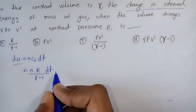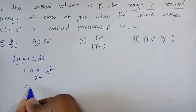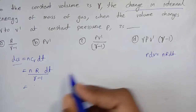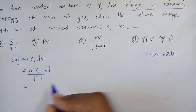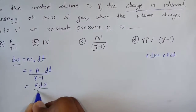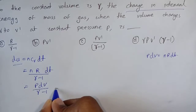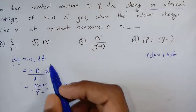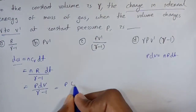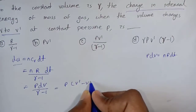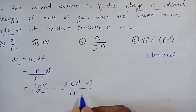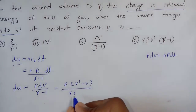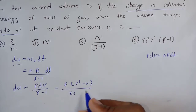जो NR·DT होता है, वो P·DV होता है। तो हम NR·DT की जगह P·DV लगा देंगे — P·DV divided by (gamma minus 1)। यहाँ DV change in volume होता है, जो V2 से V' यानि V' (final) minus V (initial) होता है। तो answer है P(V' - V) / (gamma minus 1)।